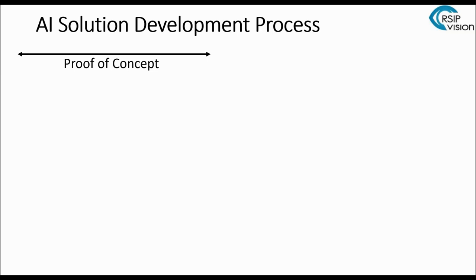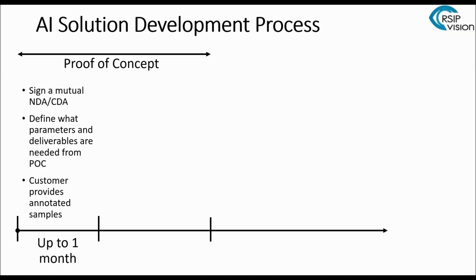Since AI is a big buzzword and it's not always clear how it's relevant to you, we'd like to show you pretty much how it will look at the end. The other thing is that once we do the proof of concept, we get to know your project and your samples, and then we can better estimate the time of development and the associated cost. It all starts when we sign a mutual NDA or CDA, which makes everything much more comfortable. Then we define what parameters and deliverables are needed from the POC — not the final solution, but something initial and good enough to give an impression of how things will look.